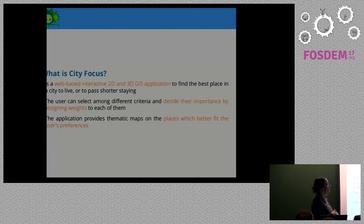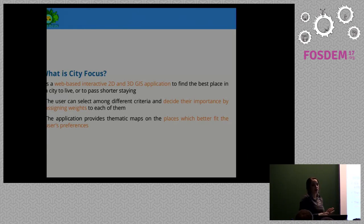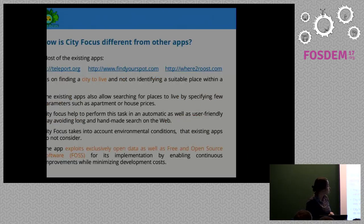The user can decide their different criteria and their importance, and at the end have a map that shows them the different places within the city.